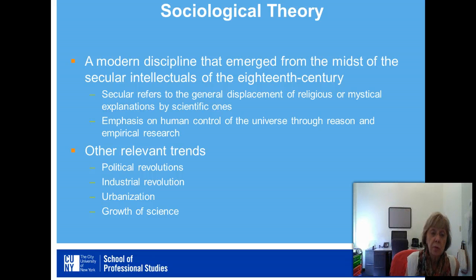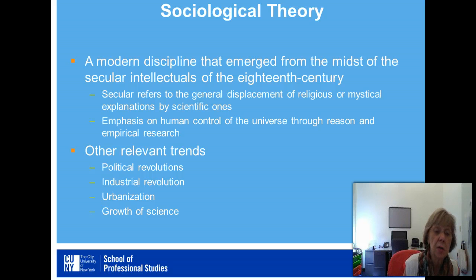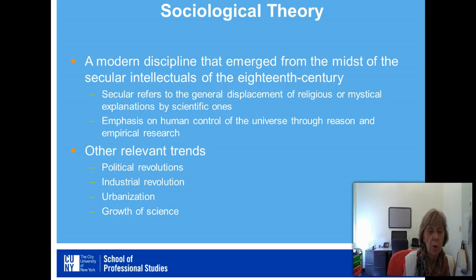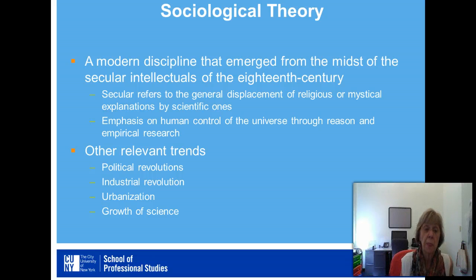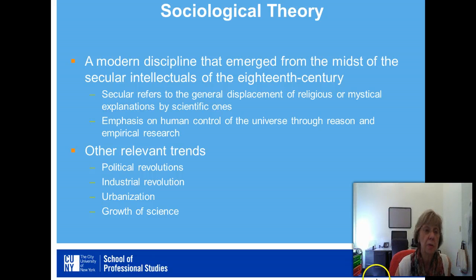Other relevant trends in the 19th century, and actually the late 18th century, that influenced the problems addressed by sociology were the political revolutions, the industrial revolution or the movement away from handcrafted production of goods to mass enterprise and mass industrial production of goods, urbanization or the movement of people into cities, and the growth of science as a way of explaining the natural and eventually the social world.